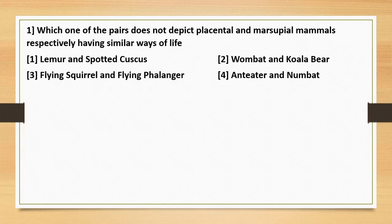Which one of the pairs does not depict placental and marsupial mammals respectively having similar ways of life? Options: 1. Lemur and spotted cuscus. 2. Wombat and koala bear. 3. Flying squirrel and flying phalanger. 4. Anteater and numbat.